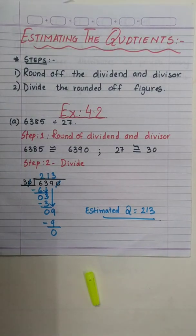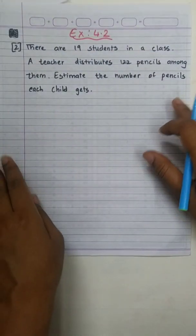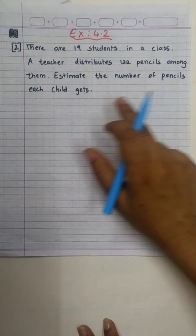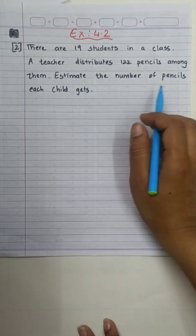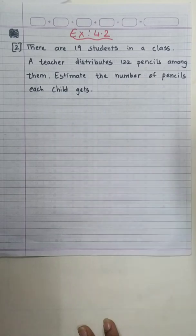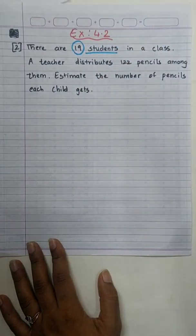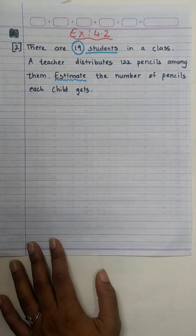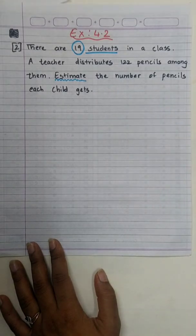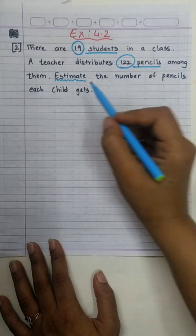I hope you found it easy. Now let's try one problem sum related to this. There are 19 students in a class. A teacher distributes 122 pencils among the students. Estimate the number of pencils each child gets. We say 'estimated' because the question uses the word 'estimate.' This is not a regular problem sum — we will round off both numbers and then divide.